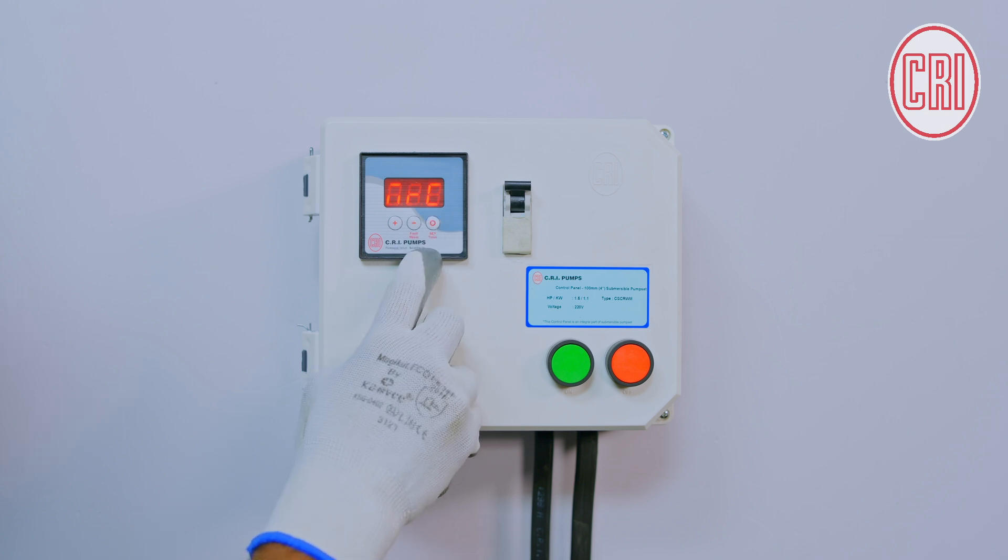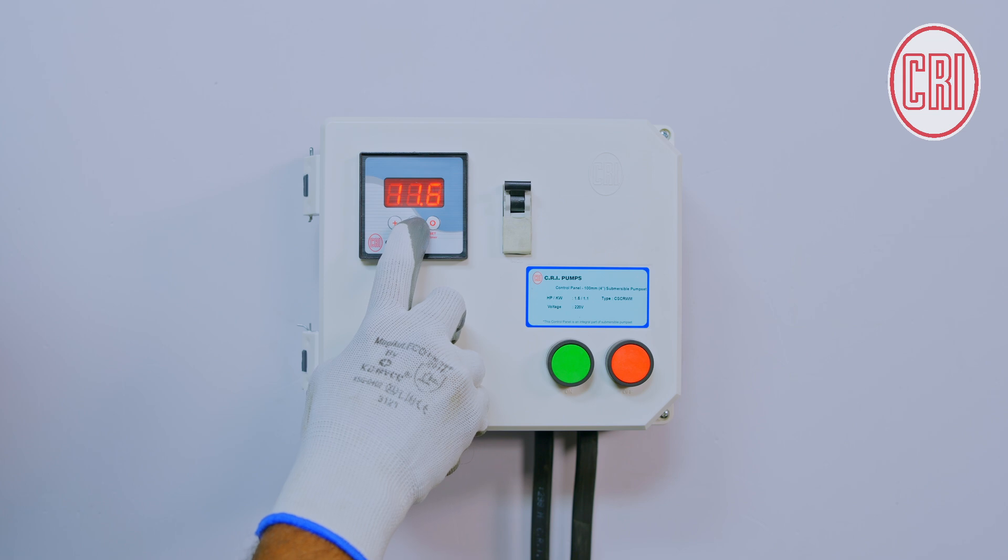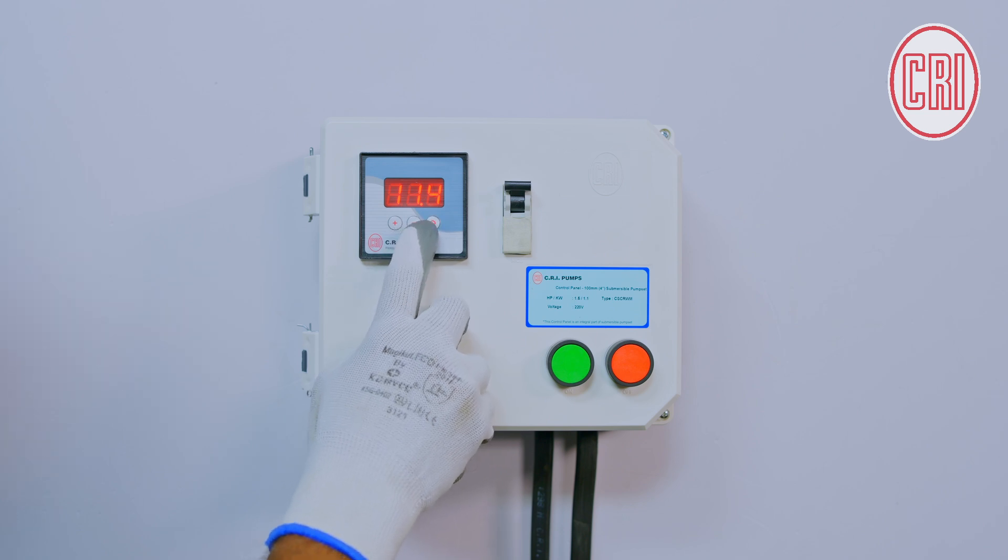we will get the MRC on the display. Thereafter, if you press again, it will read 11.4, which is a default value. This can be increased or decreased using plus or minus button respectively. We can set a minimum of 3 Amps and a maximum of 25 Amps. After setting the motor's rated current, in order to save, we need to press the Set timer button. It will be saved.